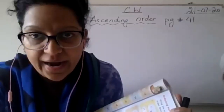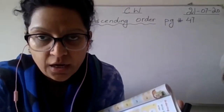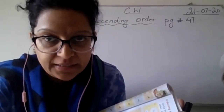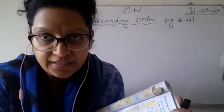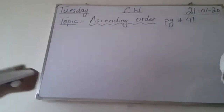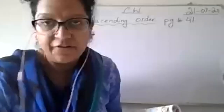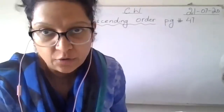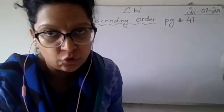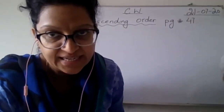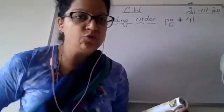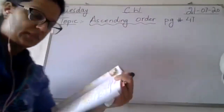First of all I have to take attendance, then I have to start. Hurry up class, get ready with your books and pencil boxes. Page number 47 of the countdown book. Ascending order — as you all know, ascending means smaller to the biggest number.